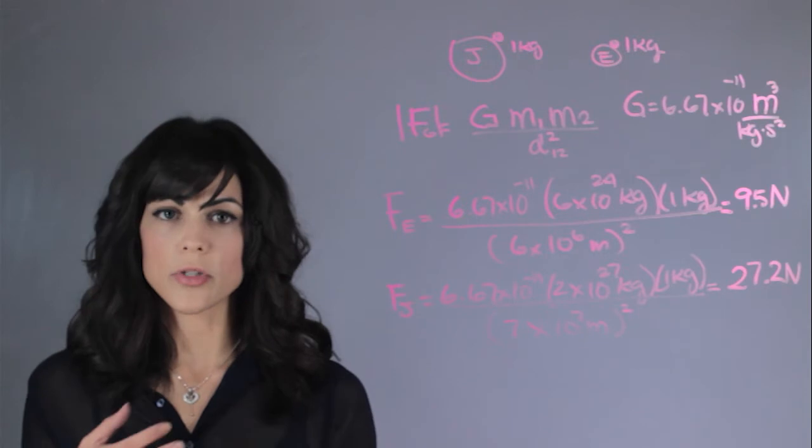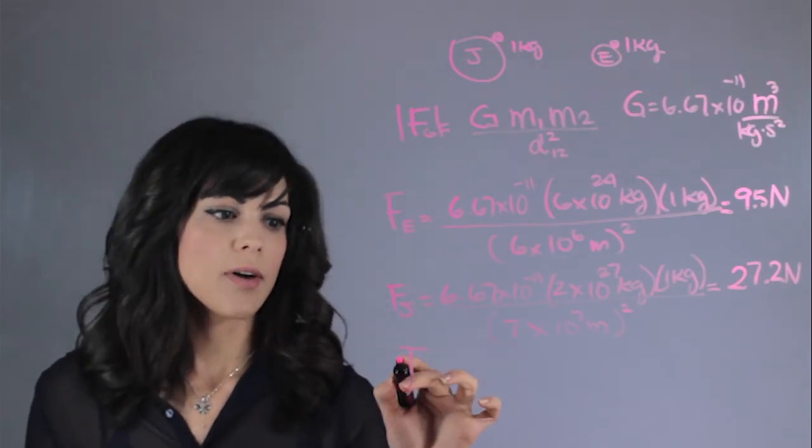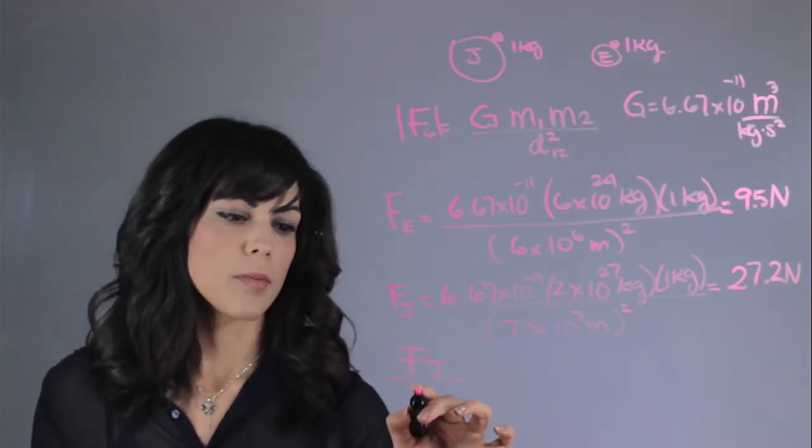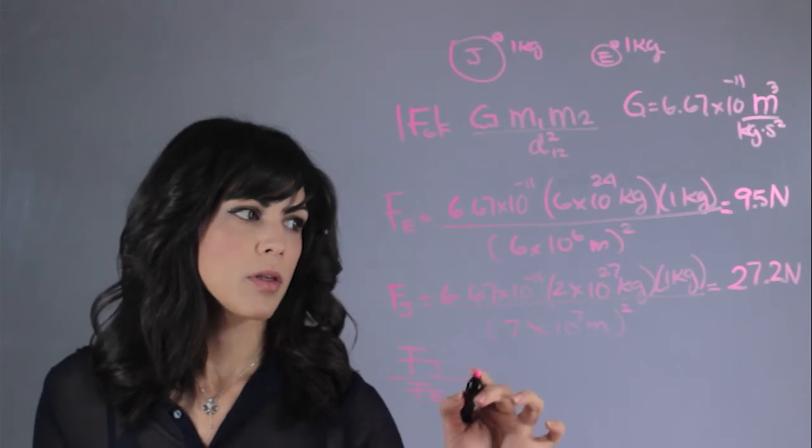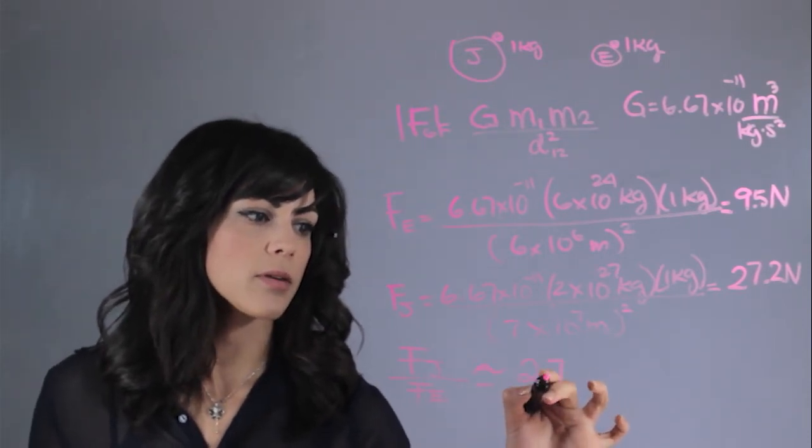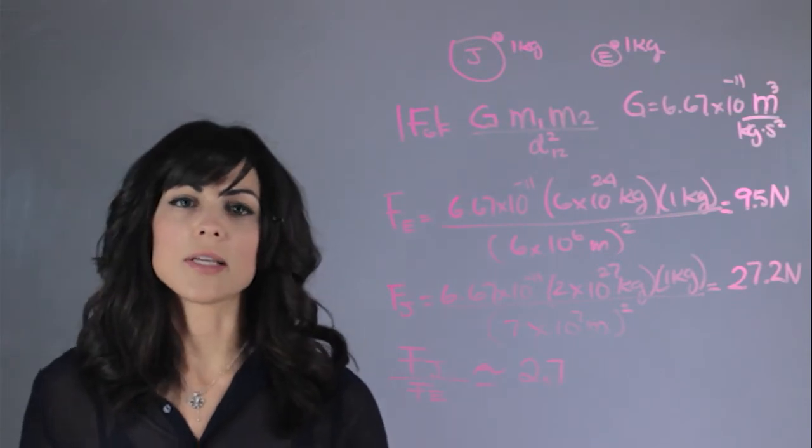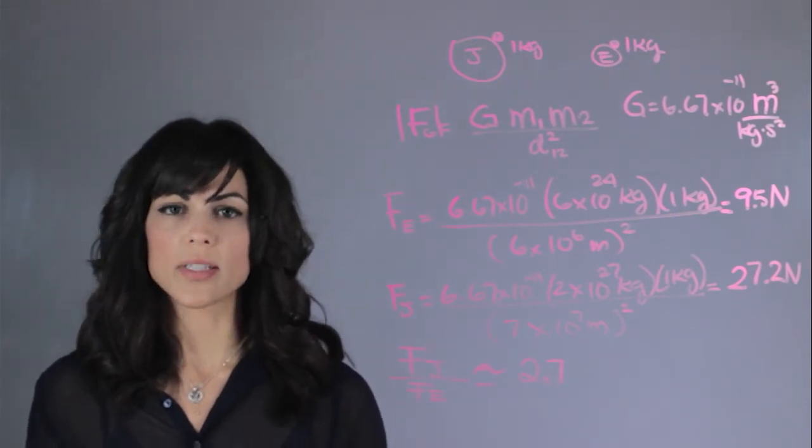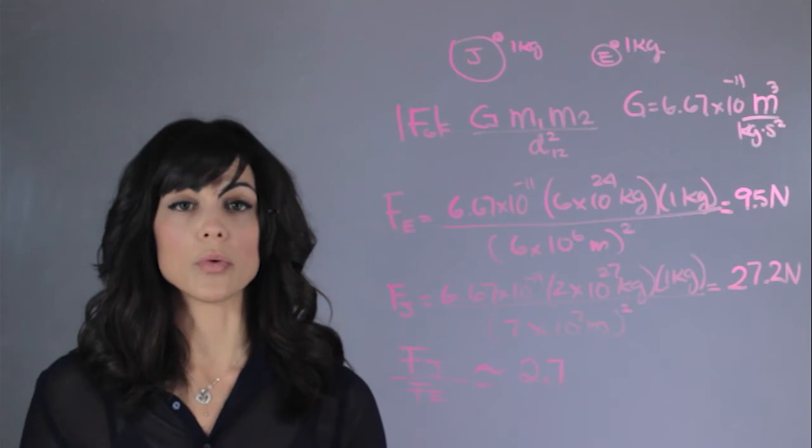Now exactly how much stronger it is. If we divide the force of Jupiter by the force of the Earth, we see that it is approximately 2.7. Meaning that the gravitational pull of Jupiter is 2.7 times stronger than the gravitational pull of the Earth.